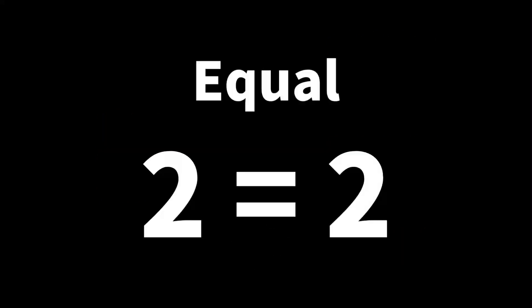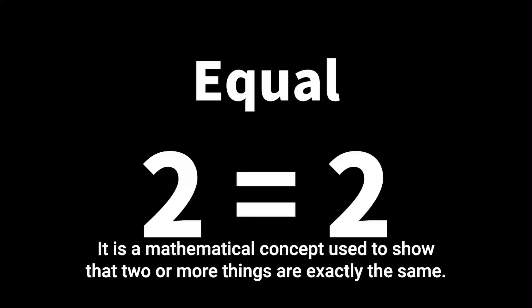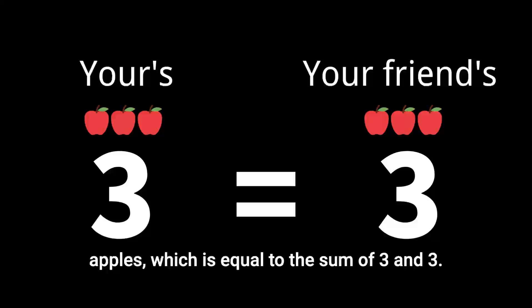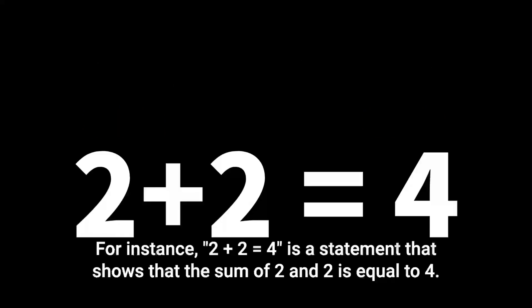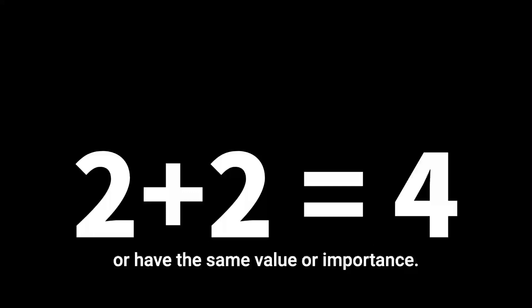Equal means having the same value, size, or quantity as something else. It is a mathematical concept used to show that two or more things are exactly the same. For example, if you have three apples and someone gives you three more apples, you now have six apples, which is equal to the sum of three and three. The equals symbol is used in mathematics to indicate that two things are equal. For instance, two plus two equals four is a statement that shows that the sum of two and two is equal to four. In everyday life, we often use the word equal to describe things that are the same or have the same value or importance.